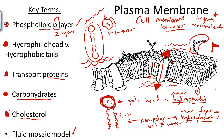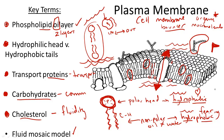Cholesterol structures are embedded in the nonpolar regions of the phospholipid bilayer, and they help with the extremes of fluidity. Carbohydrates help with communication, transport proteins help with transport, and cholesterol helps maintain the wave-like structure that these phospholipids form. They need to be able to move fluidly when animal cells are moving, but they also don't want to get too fluid, because they might fall apart in cold temperatures. So cholesterol helps make the membrane just the right amount of fluid.